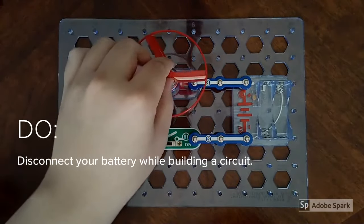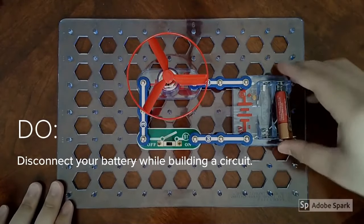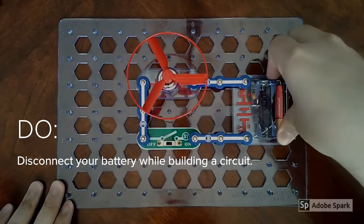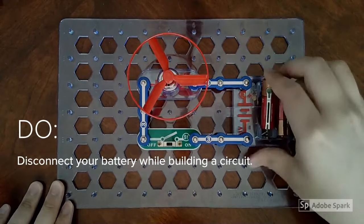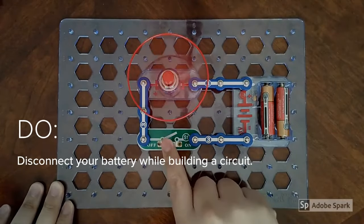Always make sure that your batteries are disconnected from your circuit until you're completely done building it. This also goes for the AC Snap Component. Make sure the component is not plugged into the wall or supplying power to your circuit until you're completely done and ready to test the circuit.